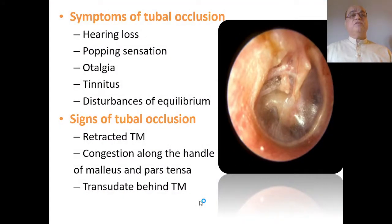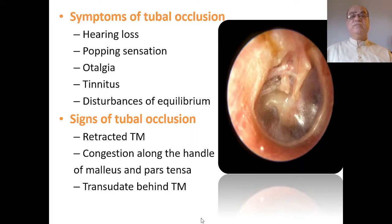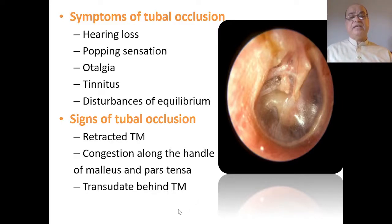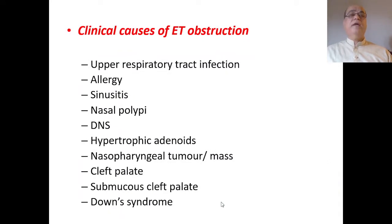Symptoms of tubal occlusion include conductive hearing loss, popping sensation, otalgia as a dull ache, tinnitus, and disturbance of equilibrium. On examination there will be retraction of the tympanic membrane and signs of retraction. If congestion is present, it will be only along the handle of the malleus and the pars tensa, and there may be transudate behind the tympanic membrane visible on otoscopy.